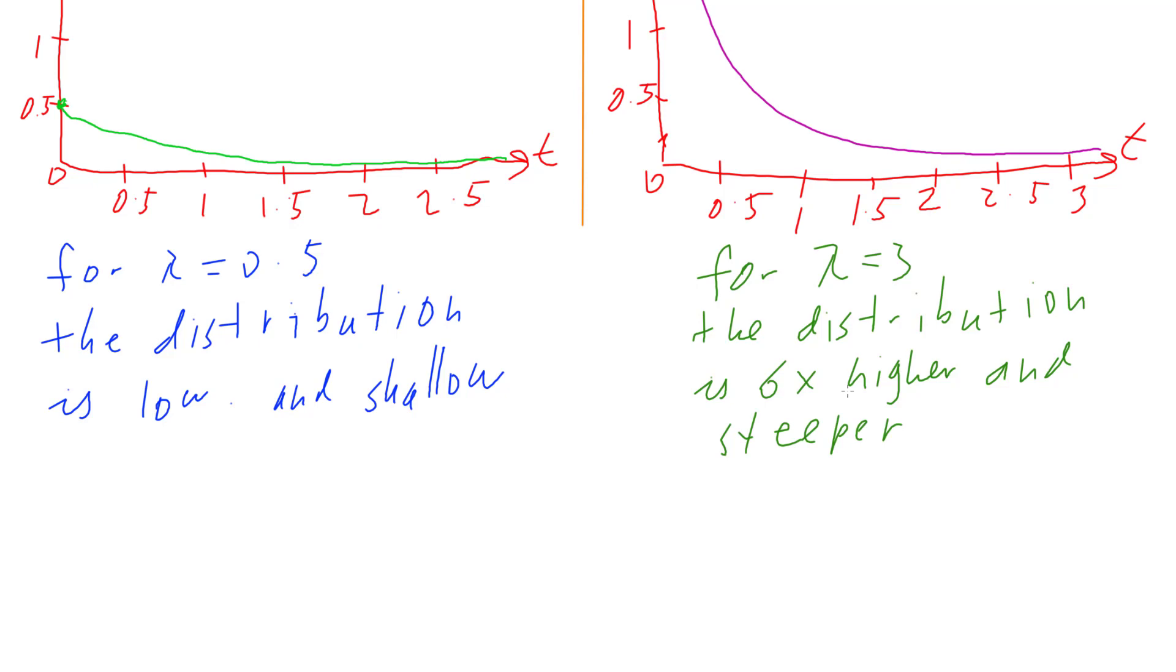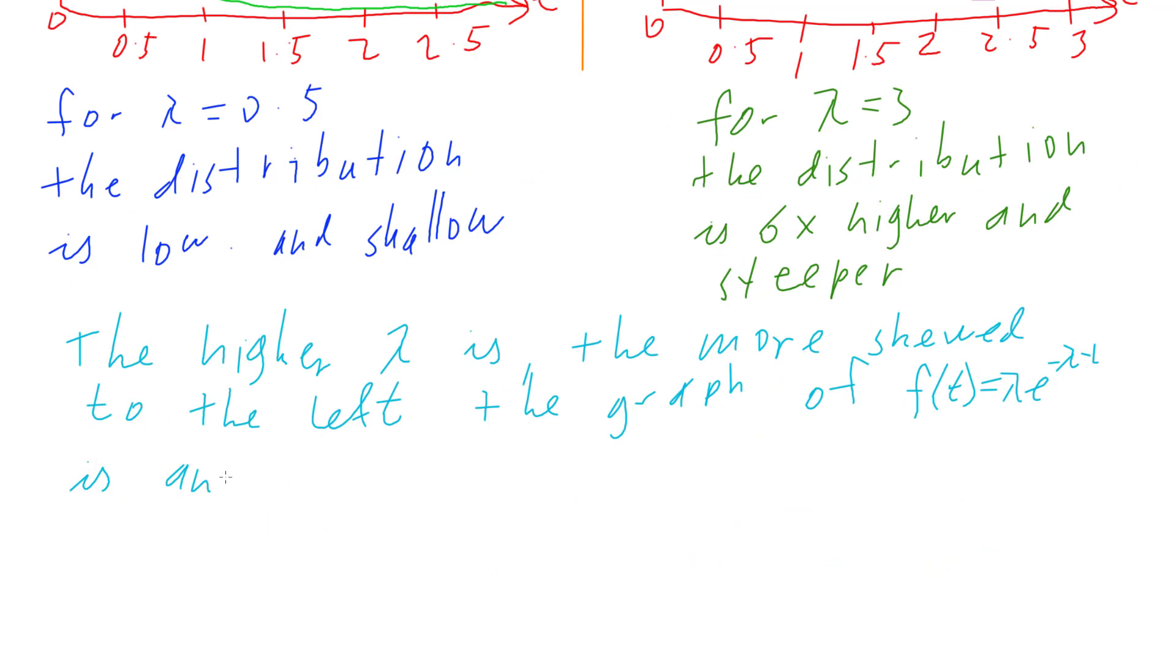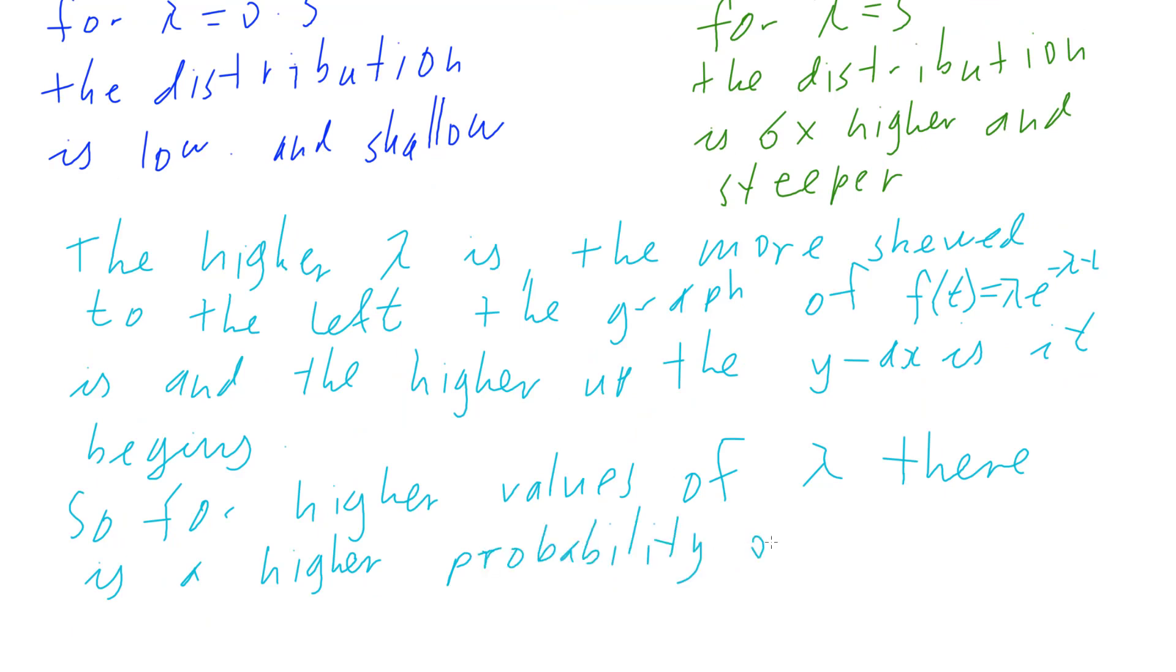So if we want to make some sort of grand overall statement, we can basically say that the higher lambda is, the more skewed to the left the graph of f(t) equals lambda e to the negative lambda t is, and the higher up the y-axis it begins. So for higher values of lambda, there is a higher probability of a lower value for t, a smaller t, because that's what these mean.